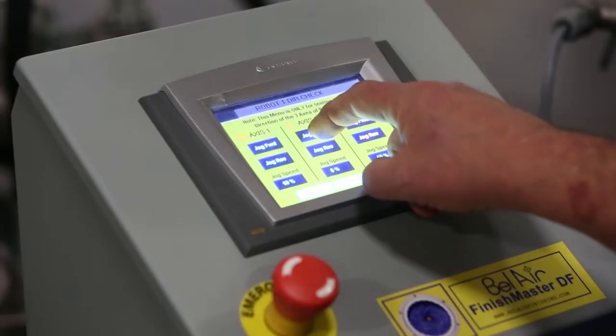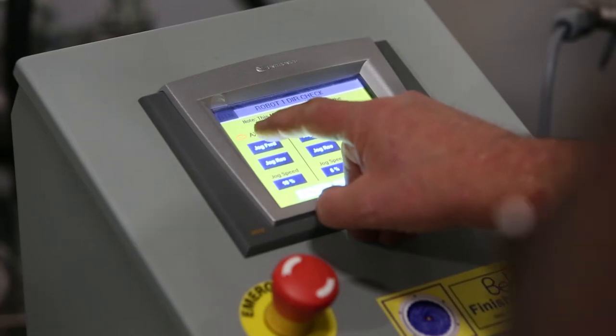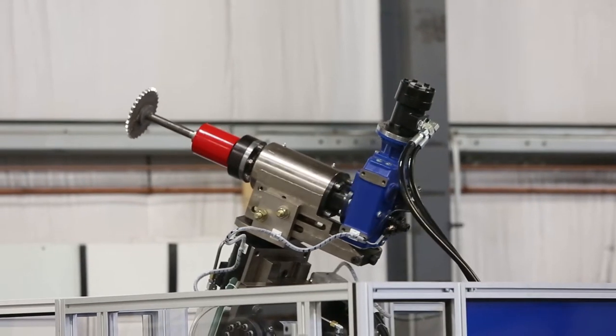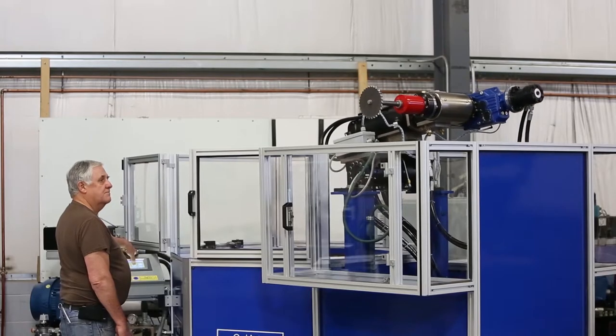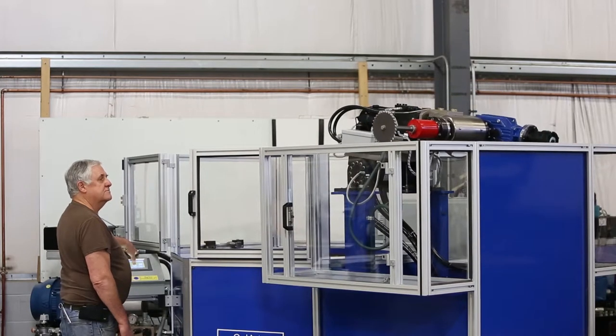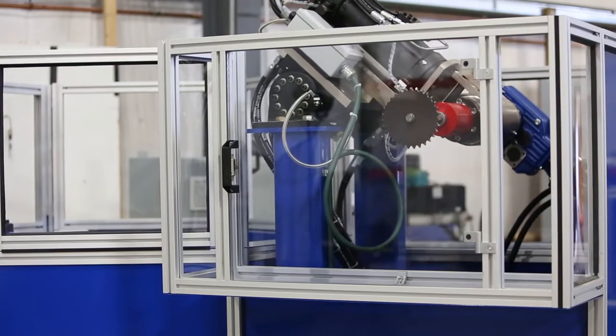With an operator-friendly PLC, this machine is able to achieve precision control on four axes of finishing. This allows for the optimum deburring or polishing of complex geometrical parts in the fastest cycle times possible.